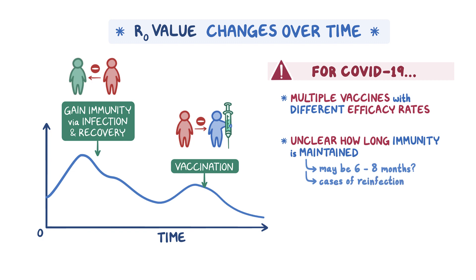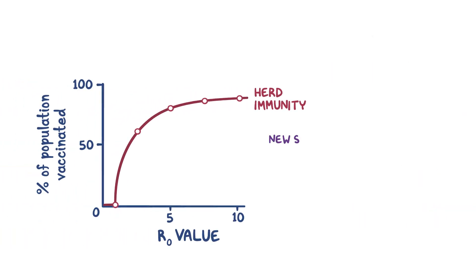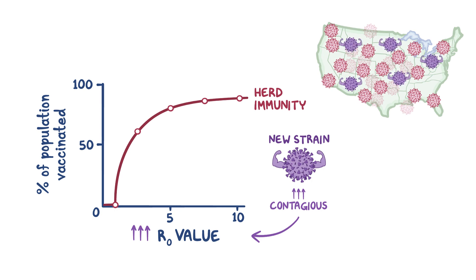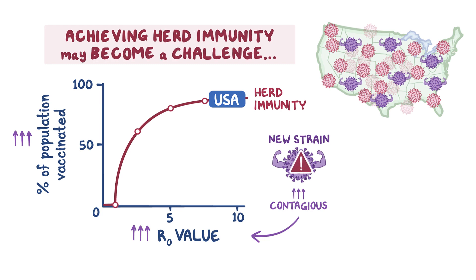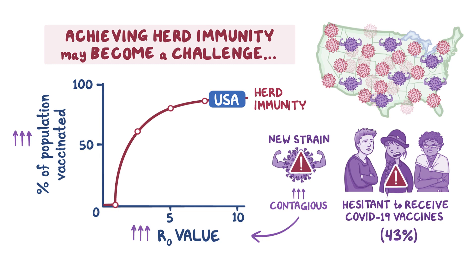Other factors that complicate calculating the herd immunity number include the demographics of a population and which groups of people are being prioritized to receive vaccination. While there are still many unknown factors that can affect COVID-19 herd immunity, we know that if the new strains of COVID-19 are more contagious than the original disease, the R0 will increase. So as the variant strains become more prevalent in the United States, more people will need to be vaccinated to achieve herd immunity. Achieving herd immunity may become a challenge not only due to new variant strains, but also due to the large number of people in the United States that are hesitant to receive the COVID-19 vaccines, estimated to be about 43% of the population.